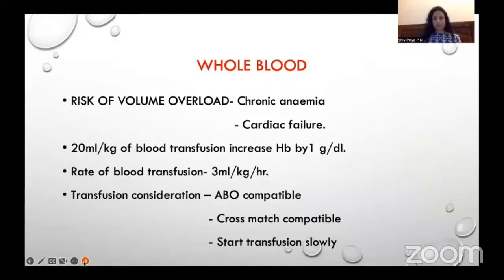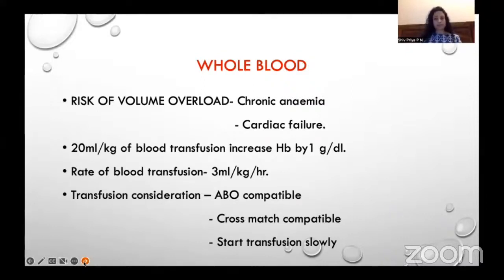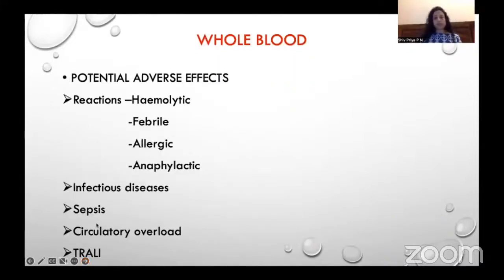There are various risks involved with whole blood transfusion. Risk of volume overload, especially in chronic anemia and cardiac failure. Twenty ml per kg of blood transfusion increases hemoglobin by 1 gram per deciliter; infusion rate should be 3 ml per kg per hour. The blood should be ABO compatible and cross-match compatible, and transfusion should be started slowly to monitor for reactions. Various reactions can occur — anaphylactic, allergic, febrile, and hemolytic. Whole blood can be a source of infection, leading to sepsis, circulatory overload, and transfusion-related acute lung injury.